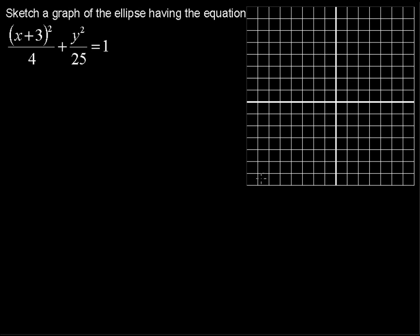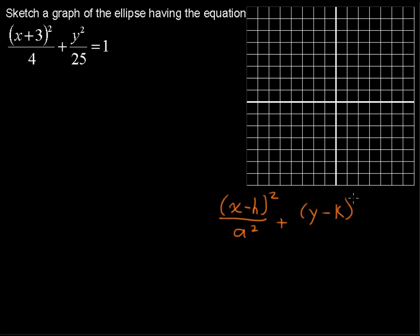Let's first remember the standard form of an equation of an ellipse: x minus h quantity squared over a squared plus y minus k quantity squared over b squared equals 1.